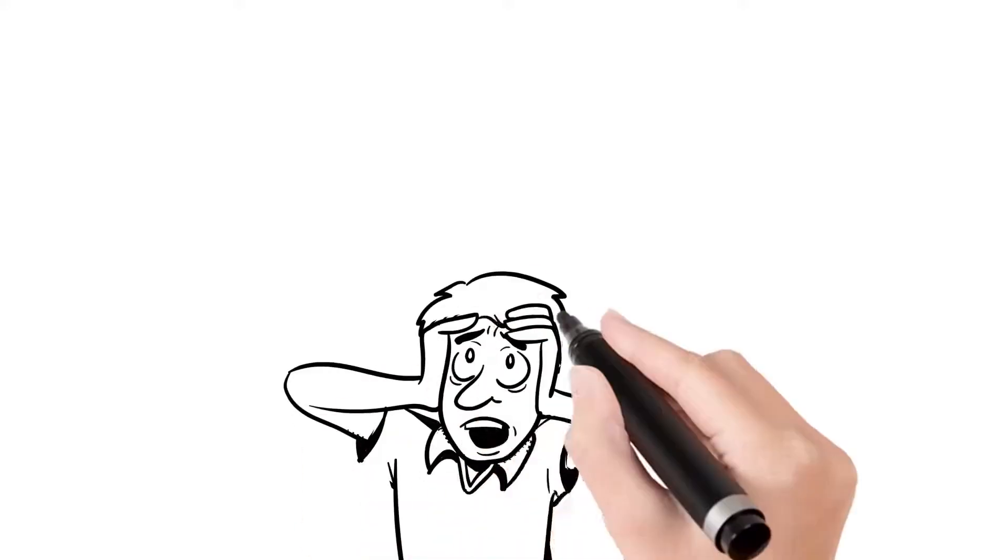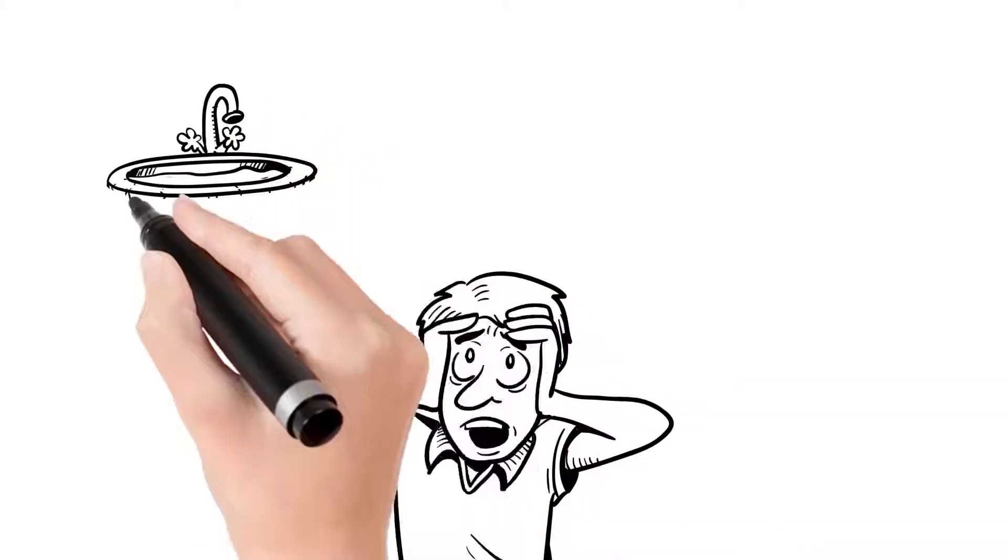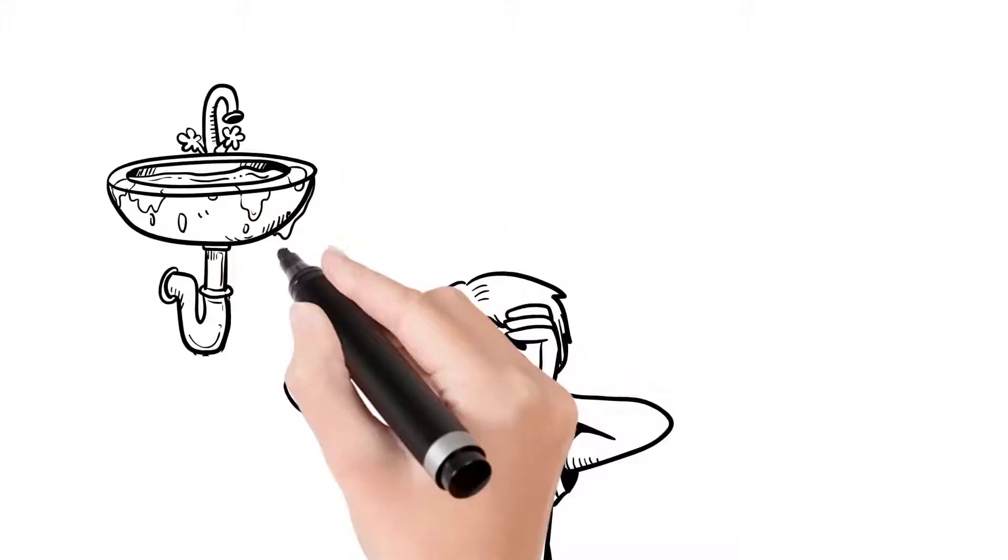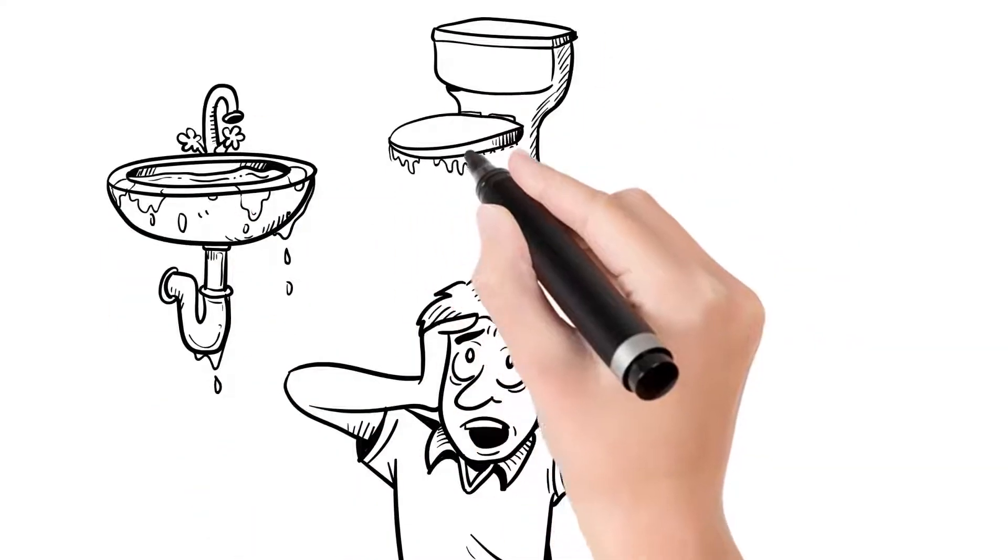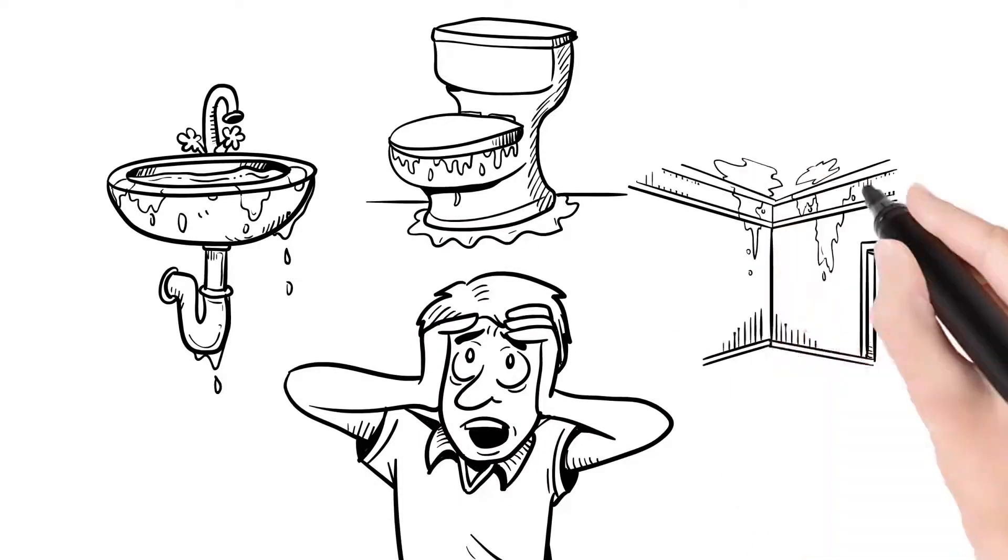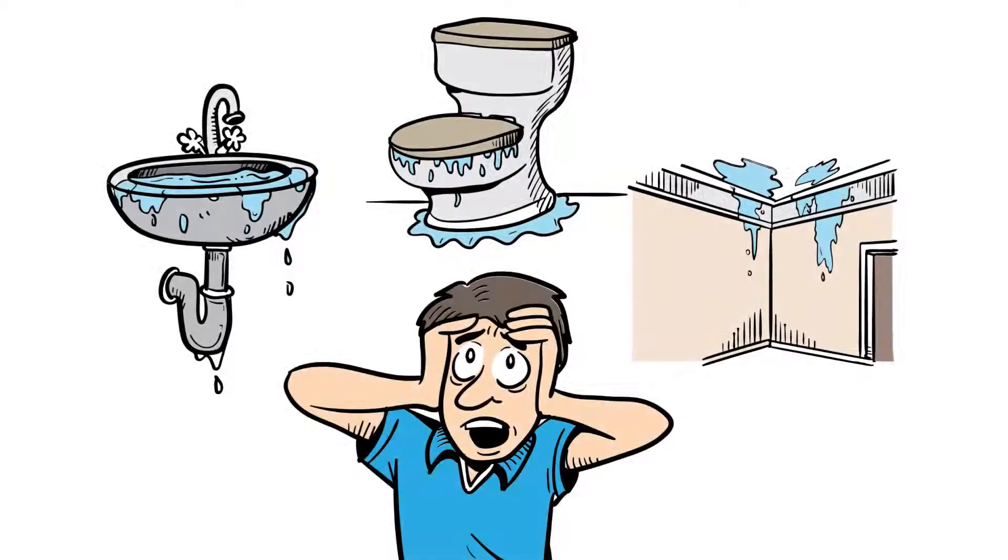Are you currently experiencing one of these plumbing issues? Your toilets and sinks are slow to drain. You have wet spots on your walls. Or maybe your drains are overflowing.